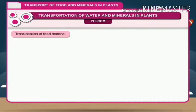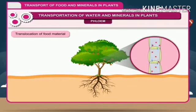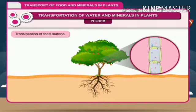Translocation of food material: The prepared food material reaching from the leaf to different plant organs is called translocation of food material. Phloem cells are involved in the transport of soluble food material from leaves to different plant organs. This movement of food through the phloem cells is bi-directional — food can move upward and downward simultaneously.